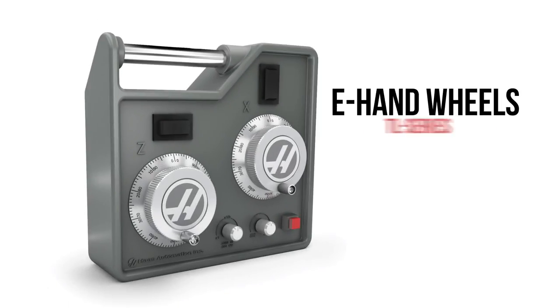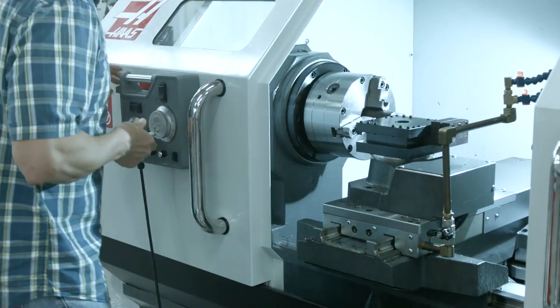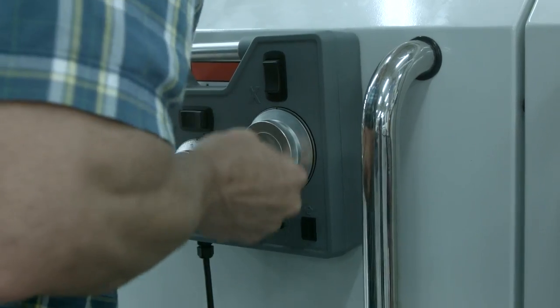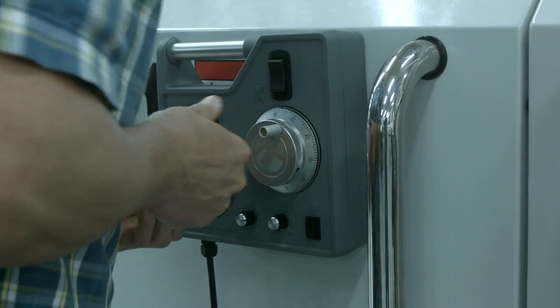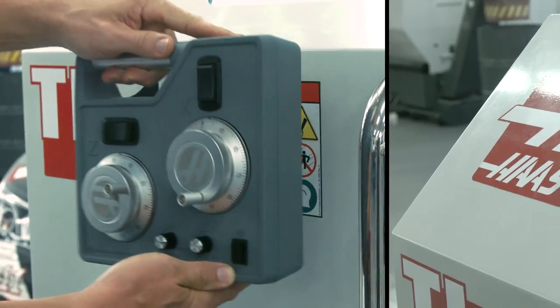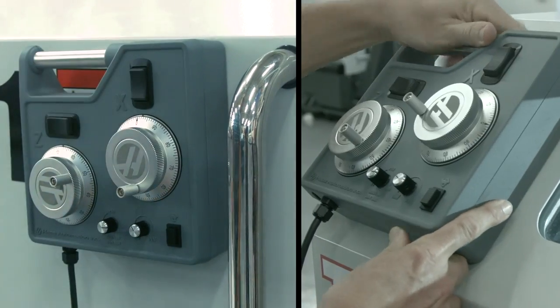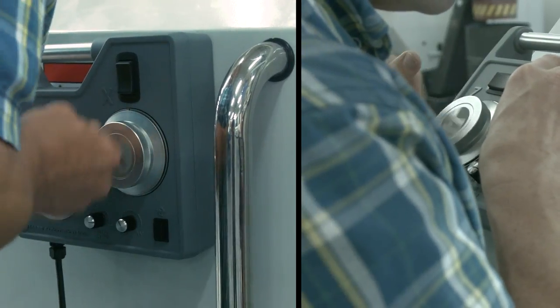The E-Handwheels option for your TL Series lathe allows you to manually control X and Z motion, similar to using the handles on a manual lathe. Mount the unit anywhere on the enclosure, and don't worry, the powerful magnetic back will keep it stuck right where you want it.